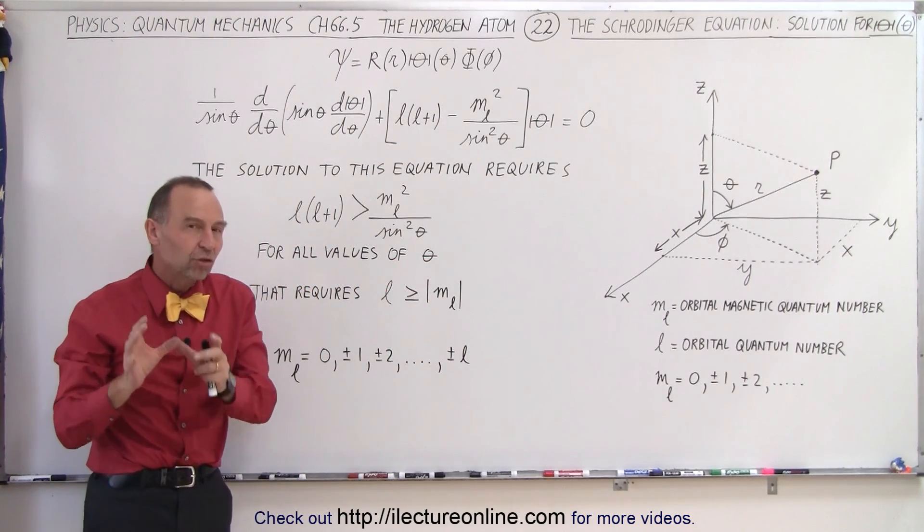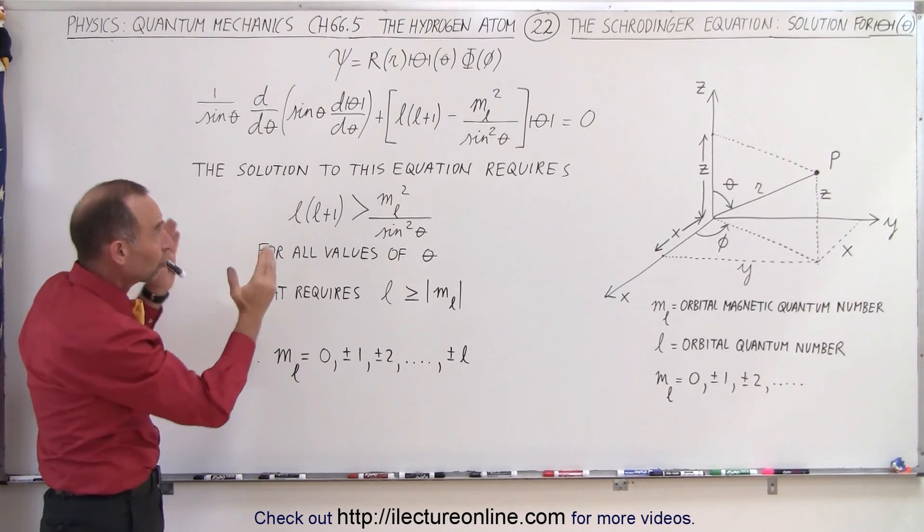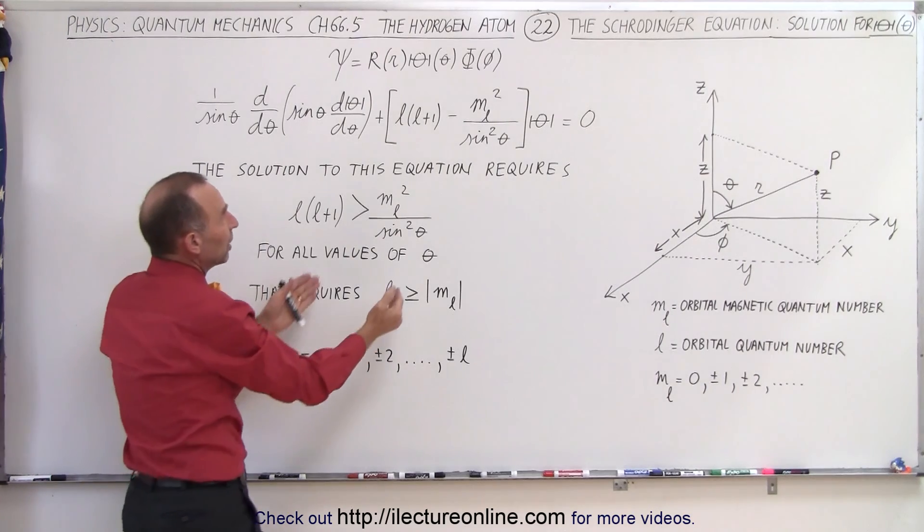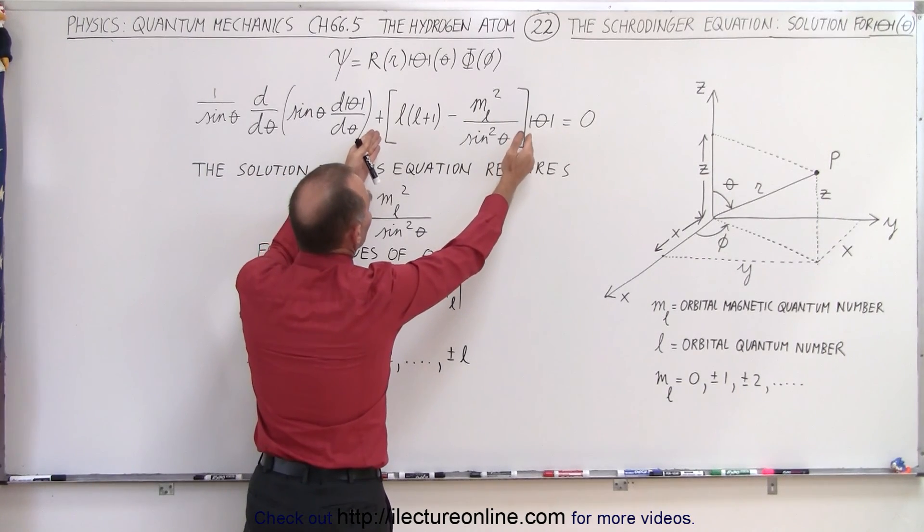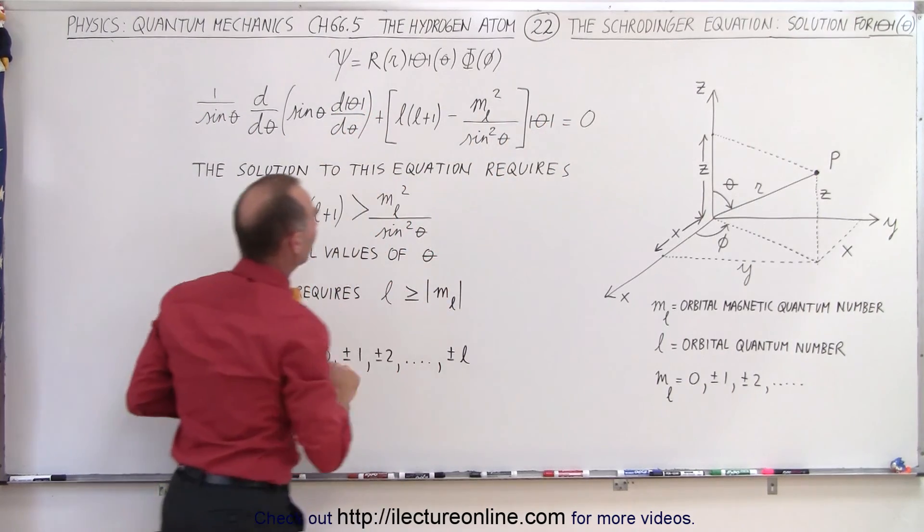So without actually solving the differential equation, which we will do later, we're just going to look at the format of the equation and say that the only way we can have a valid solution to this equation is that what's in this bracket is equal to a positive quantity, so that this plus this being positive equals zero.